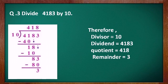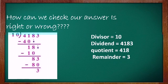Therefore, divisor is 10, dividend is 4183, quotient is 418, and remainder is 3. If we follow the steps there will be no error. But if you skip any step, then you will face a problem.